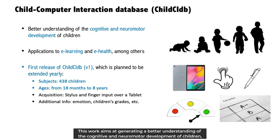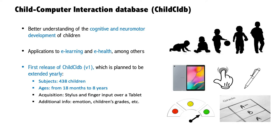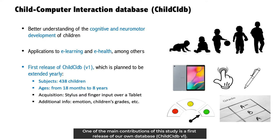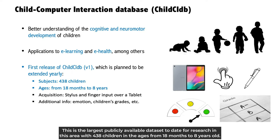This work aims at generating a better understanding of the cognitive and neuromotor development of children, as well as enabling new applications in e-learning and e-health. One of the main contributions of this study is a first release of our own database, ChildCIDB V1. This is the largest publicly available dataset to date for research in this area, with 438 children in the ages from 18 months to 8 years old.